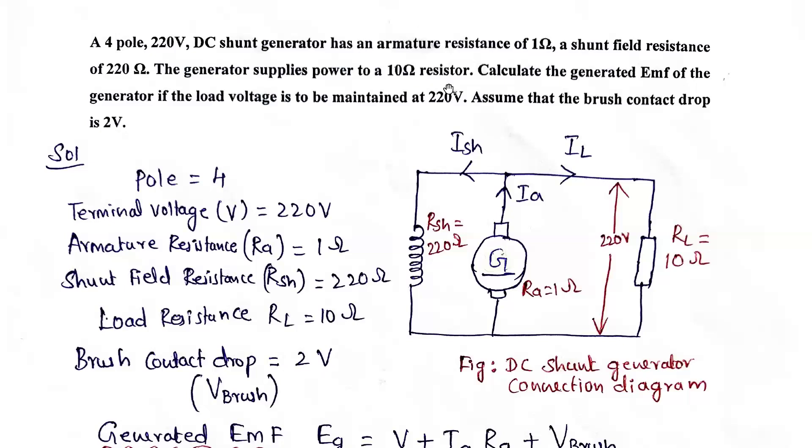That means load resistance is 10 ohms. Calculate the generated EMF of the generator if the voltage is to be maintained at 220 volts - that is, terminal voltage is 220 volts. Assume that brush contact drop is 2 volts, so brush contact drop is also given.